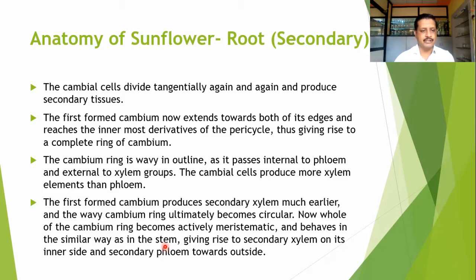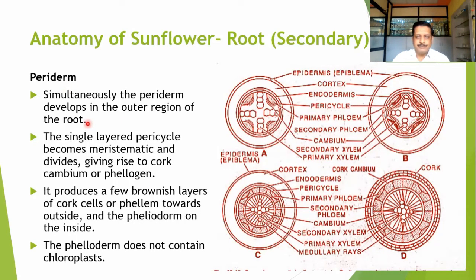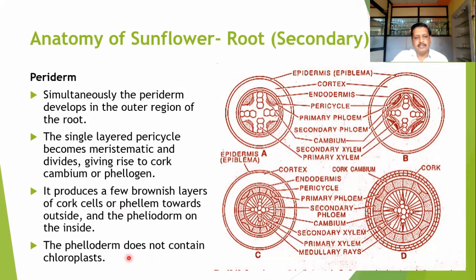The cambium gives rise to secondary xylem on its inner side and secondary phloem towards the outer side. Simultaneously, the periderm develops in the outer region of the root. The single-layered pericycle becomes meristematic and divides, giving rise to a cork cambium or phellogen. This produces a few brownish layers known as cork cells, which are normally developed similar to those in the stem.